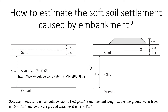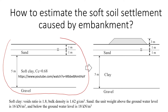This video will explain how to estimate the settlement of soft clay caused by the construction of an embankment. Let's look at this example: we have a soil profile with two meters of sand, and a groundwater level one meter below the ground surface. Below the sand we have a soft clay.